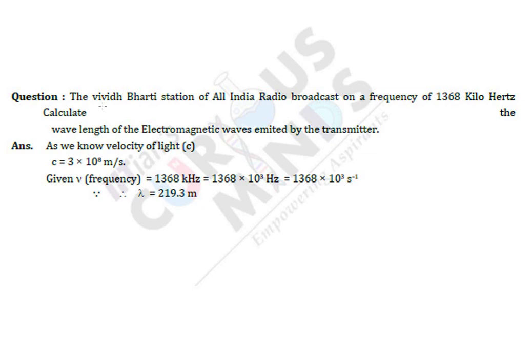Hi guys, let us solve this problem. The Vivid Bharti station of All India Radio broadcasts on a frequency of 1368 kHz. Calculate the wavelength of electromagnetic waves emitted by the transmitter.